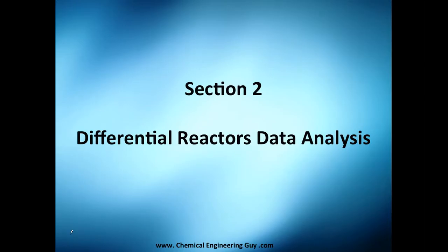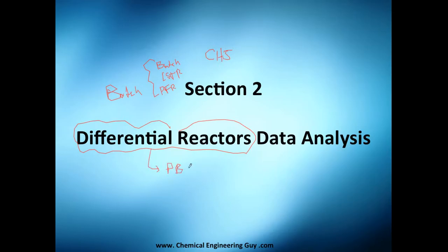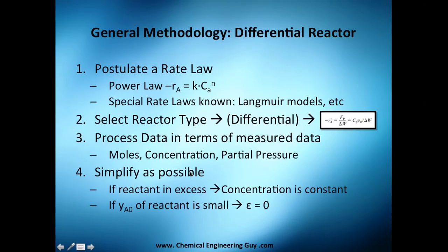It's time to start with section number two from chapter five, which is the data analysis or rate data collection and analysis. This part is about differential reactors. We've seen before the batch reactor analysis, which applies to batch reactors, CSTRs, and PFRs — plug flow reactors. This applies in general for PBR; we want to analyze the PBR rate of reaction.